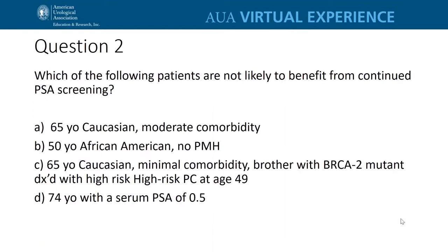Question two: which of the following patients are not likely to benefit from continued PSA screening? A, a 65-year-old Caucasian with moderate comorbidity; B, a 50-year-old African American with no significant past medical history; C, a 65-year-old Caucasian with minimal comorbidity and a brother with BRCA mutation diagnosed with high-risk prostate cancer at age 49; or D, a 74-year-old man with a serum PSA of 0.5.